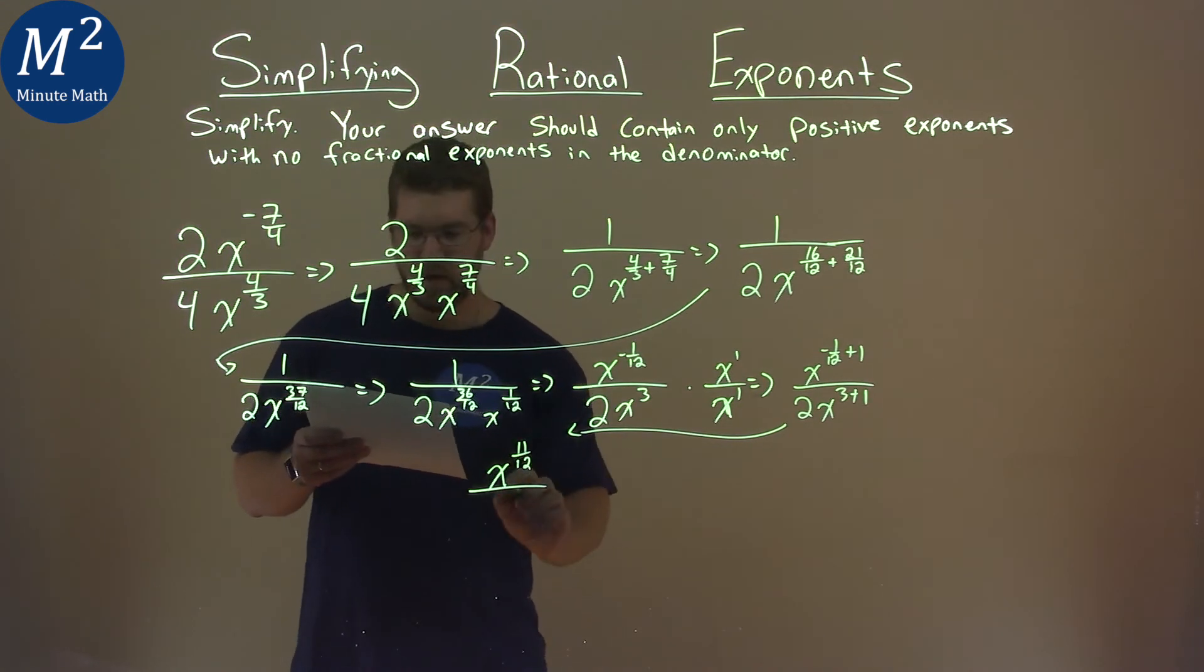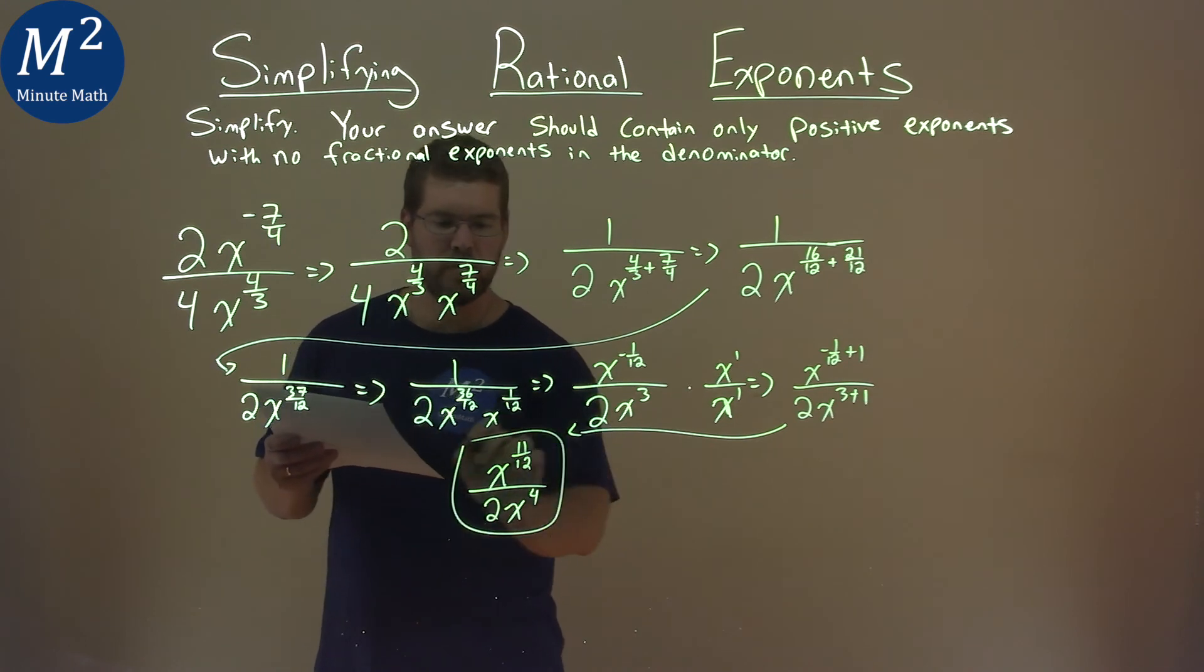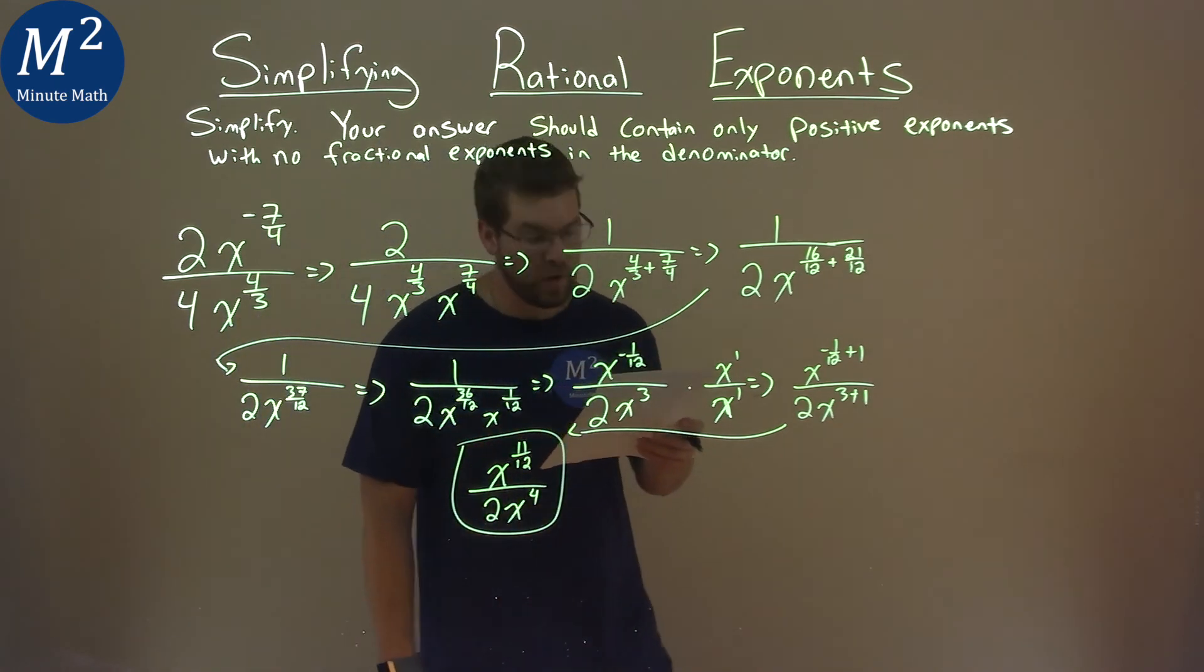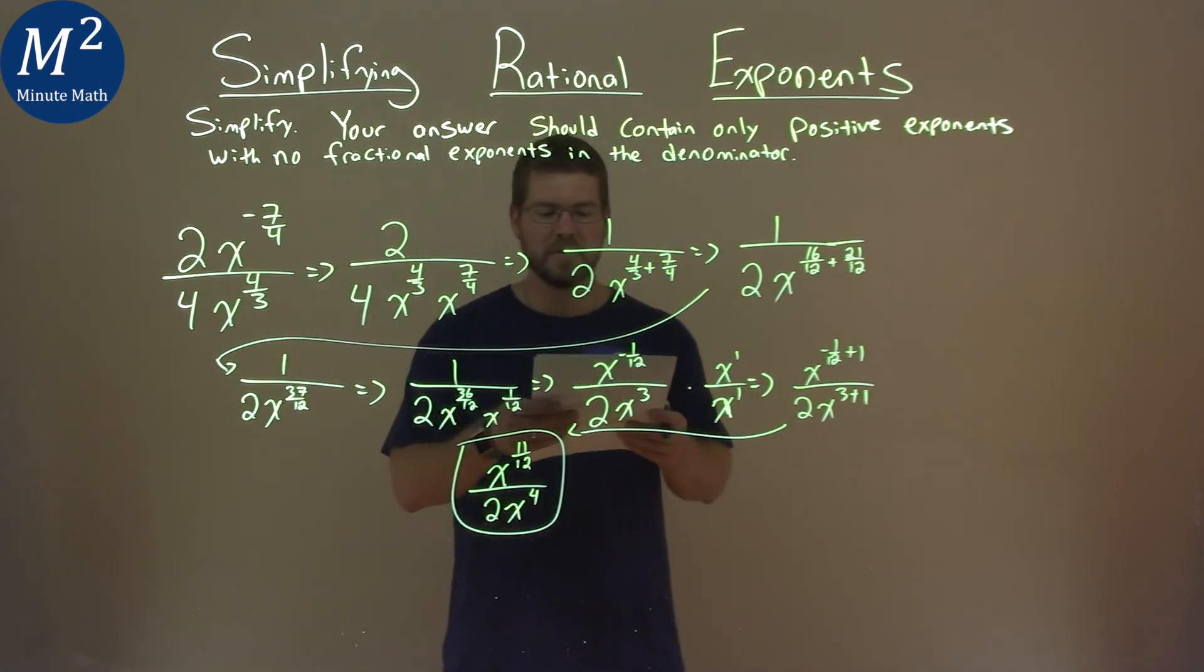And in the denominator, we have 2x, and 3 plus 1 is 4. And so our final answer here is x to the 11 twelfths power over 2x to the 4th power.